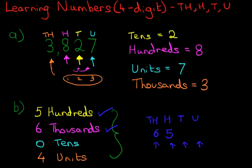The next one is zero tens. So under the T, put a zero. And lastly, we've got four units. And we can put a comma in as well, between the thousands and the hundreds. So what number do we have? We have six thousand five hundred and four.